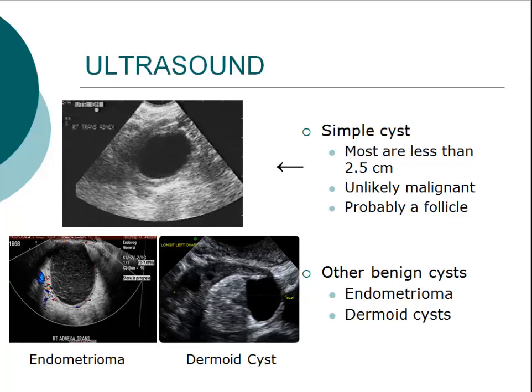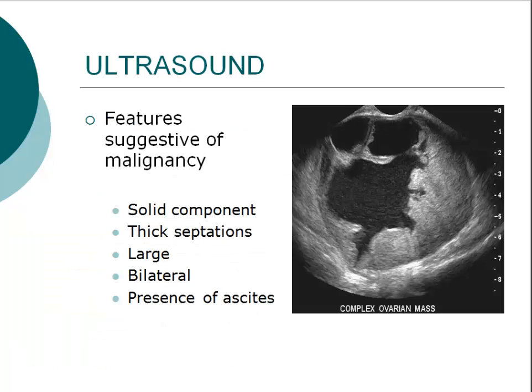Ultrasound imaging is the cornerstone for evaluation of an adnexal mass. Certain ultrasound findings are consistent with a benign process, such as a simple cyst, which is a fluid-filled sac without any solid components or septations. Other typically benign findings include an endometrioma or a dermoid cyst. Ultrasound findings that suggest malignancy include solid and cystic components, thick walls, abnormal findings on both ovaries, a large size, and the presence of free intra-abdominal fluid, or ascites.